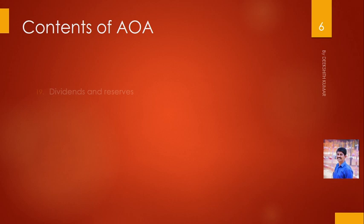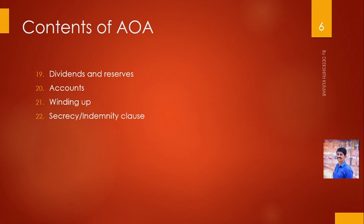Additional contents include: common seal — its custody and use; reserves — how they are distributed; accounts — how they are maintained; winding up — how the company is wound up; and indemnity and secrecy clause — how company secrets are maintained. These are the items generally mentioned in articles of association. Not all of these need to be present in every company's articles.